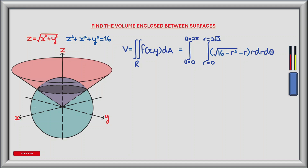Now we can evaluate our integrals. We integrate from r equals 0 to r equals 2 root 2 with integrand the square root of 16 minus r squared minus r, all multiplied by r dr. This gives a result that is then integrated between theta equals 0 and theta equals 2 pi. We can split the inner integral into two parts: the first is the square root of 16 minus r squared multiplied by r dr, and the second is minus r squared dr, both evaluated between r equals 0 and r equals 2 root 2.